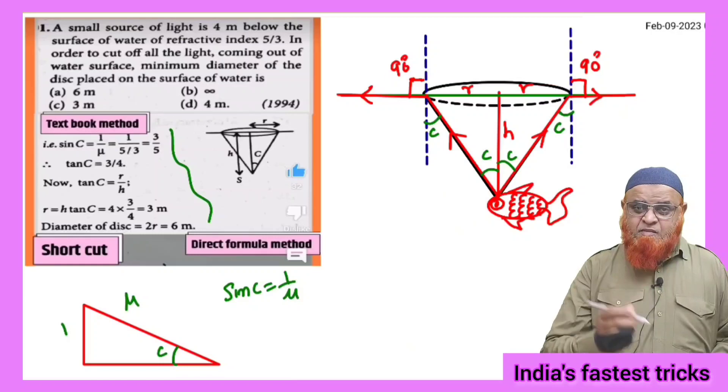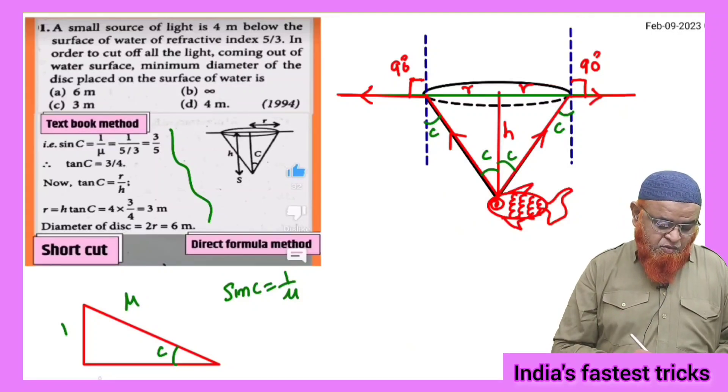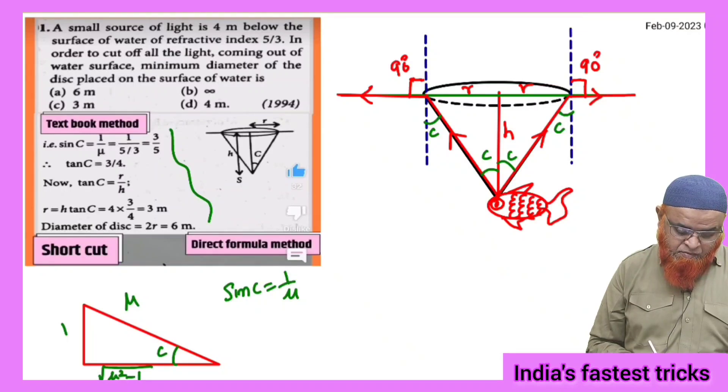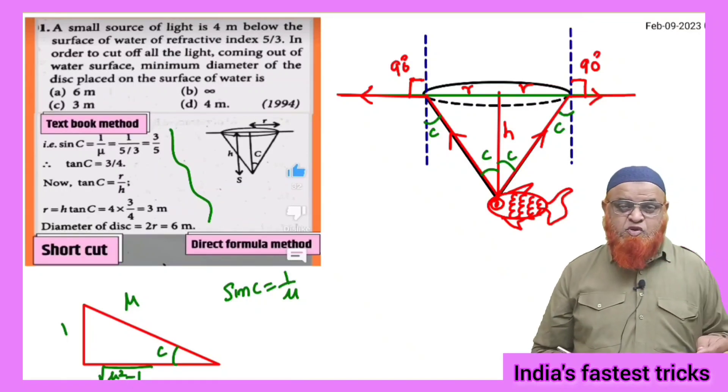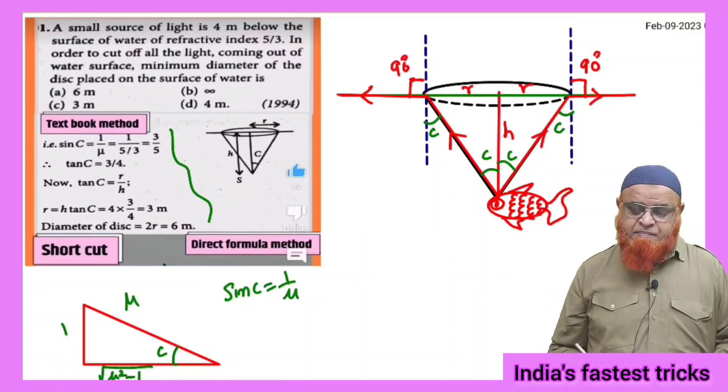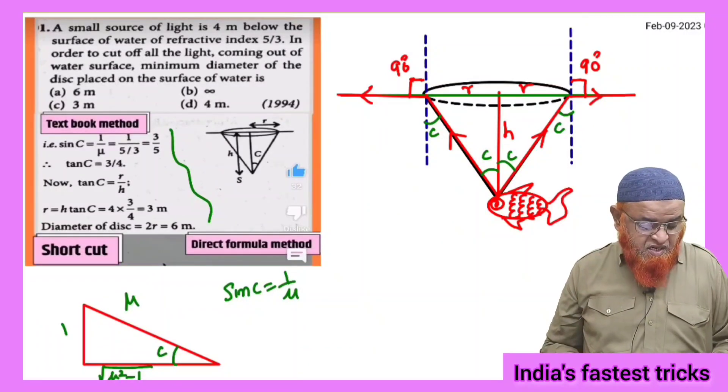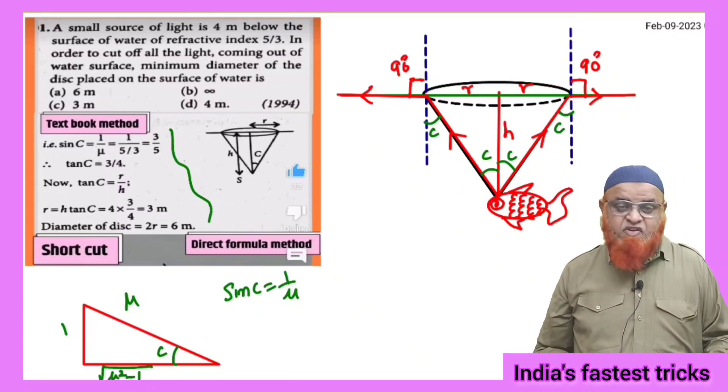Sin c means opposite side by hypotenuse is 1 into mu. And this side which is taken as square root of mu square minus 1. Square root of mu square minus 1 by using Pythagoras theorem. And he is asking us to find out what is the radius of a conical vision. What is the radius of a conical vision?